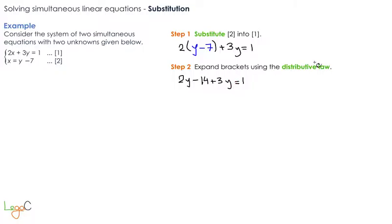Now all we have is just one equation in y, so let's solve it for y. 2y plus 3y equals 5y, take away 14. Let's bring the 1 from the right-hand side to the left-hand side, so that becomes negative 1 equals 0. We have 5y take away 15 equals 0.